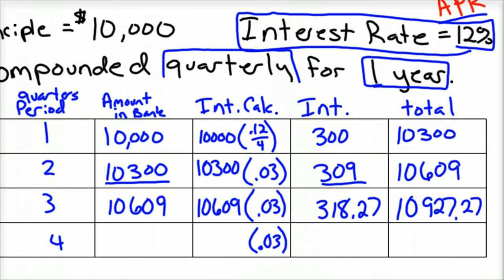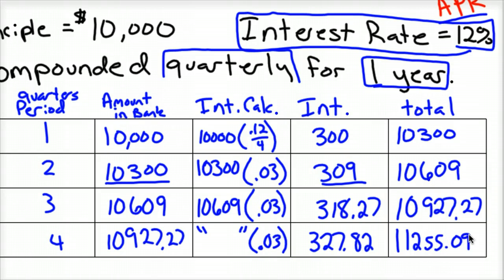And so that's what we start the beginning of the fourth quarter with. So $10,927.27. You do that same amount here, and you've got $327.82. So at the end of the fourth quarter, we have a total of $11,255.09 if you round up to the nearest penny. And so that's how you'd calculate compound interest with an actual problem.